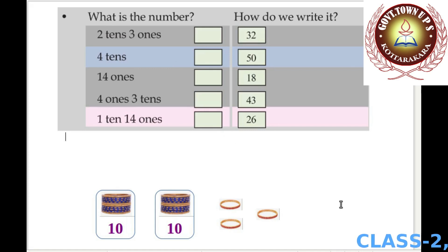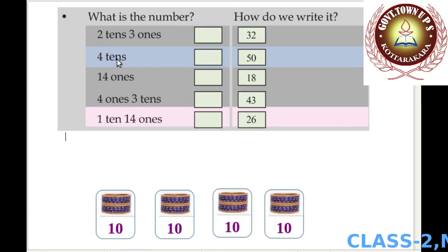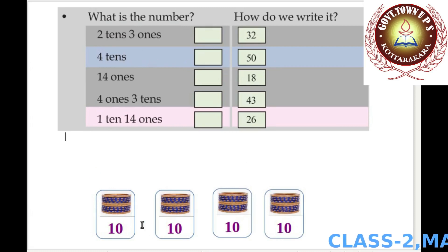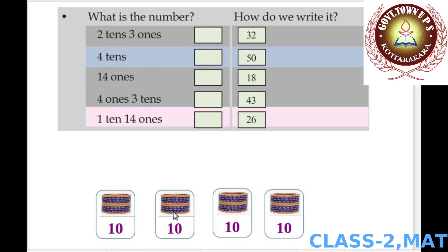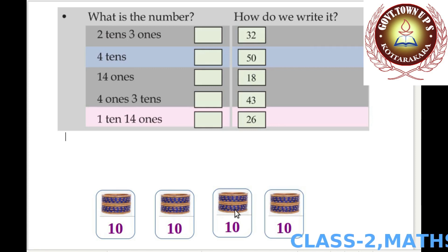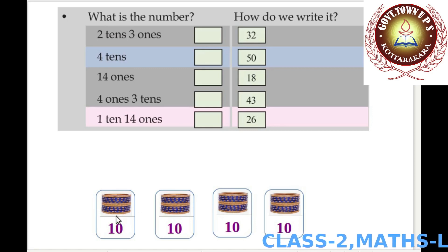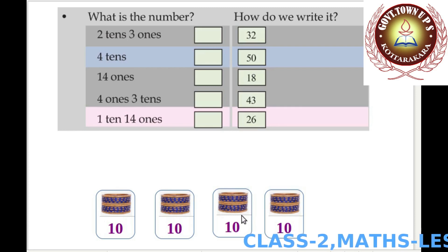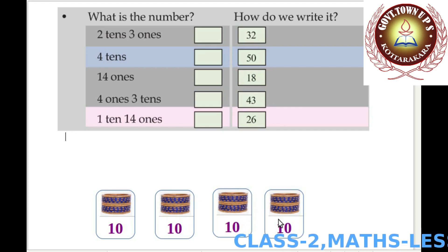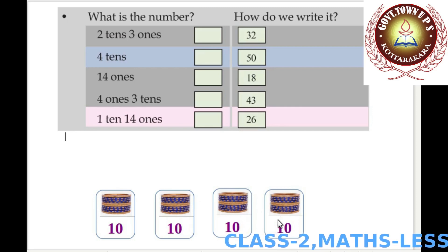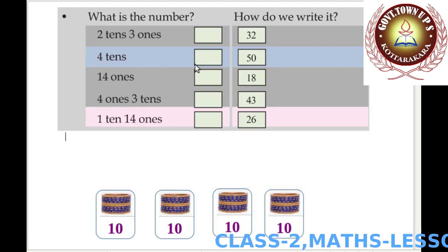Now four tens only: one ten, two tens, three tens, four tens. Ten, 20, 30, 40. Four tens equals 40.